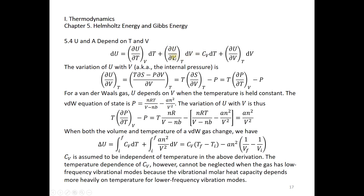The term δU/δV at constant temperature can be derived using one of the four Maxwell relations. We write δU/δV as (T·δS - P·δV)/δV, so at constant temperature the first term is T times δS/δV and the second term is negative P. Using the Maxwell relation δS/δV = δP/δT, we obtain δU/δV at constant temperature.